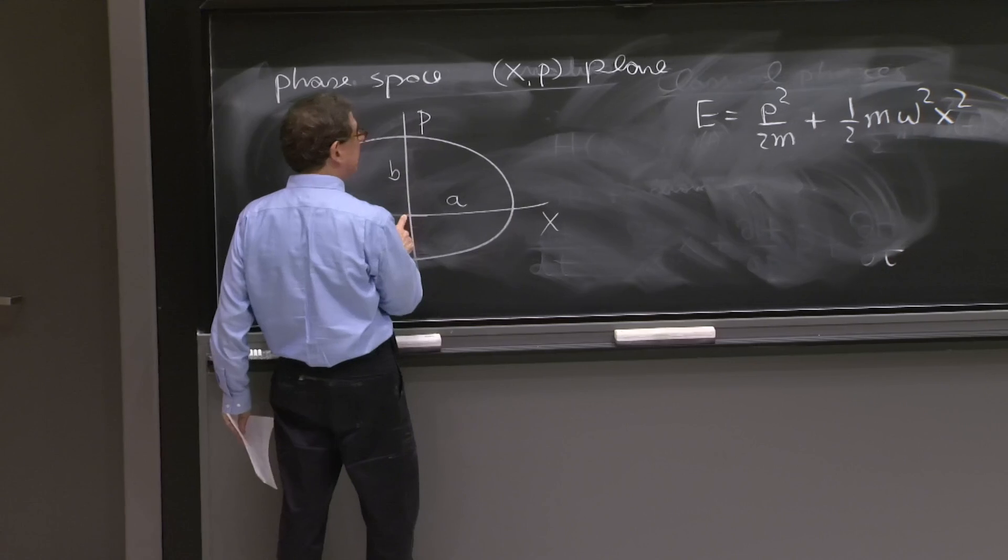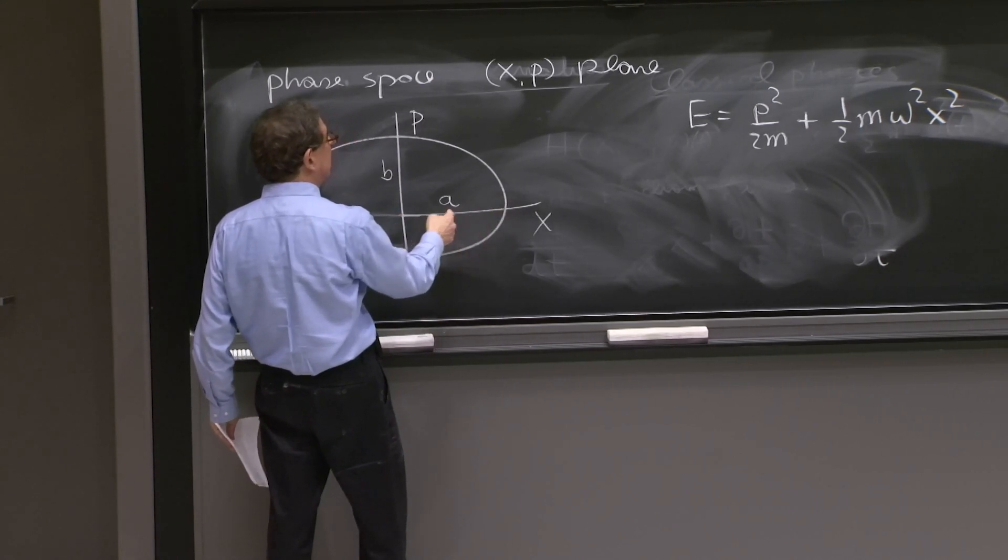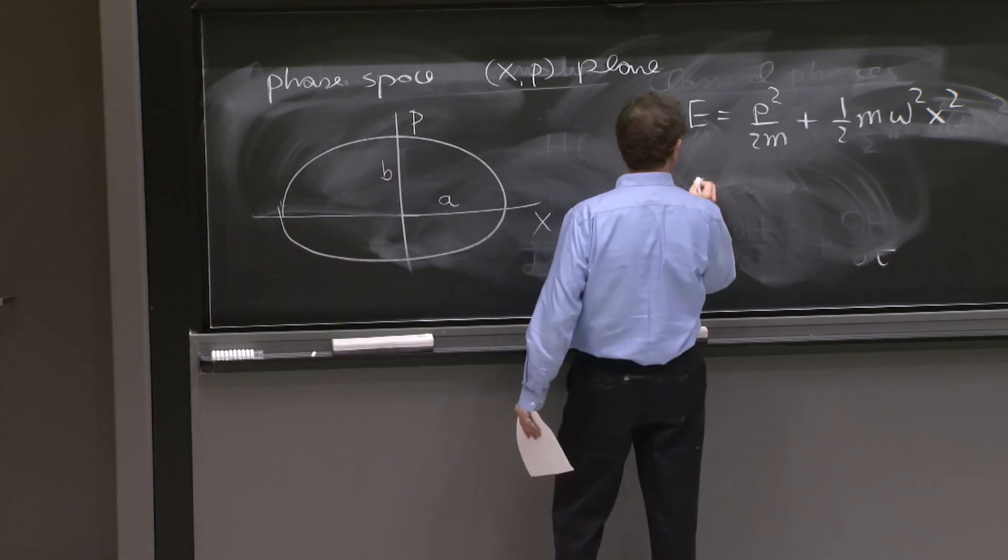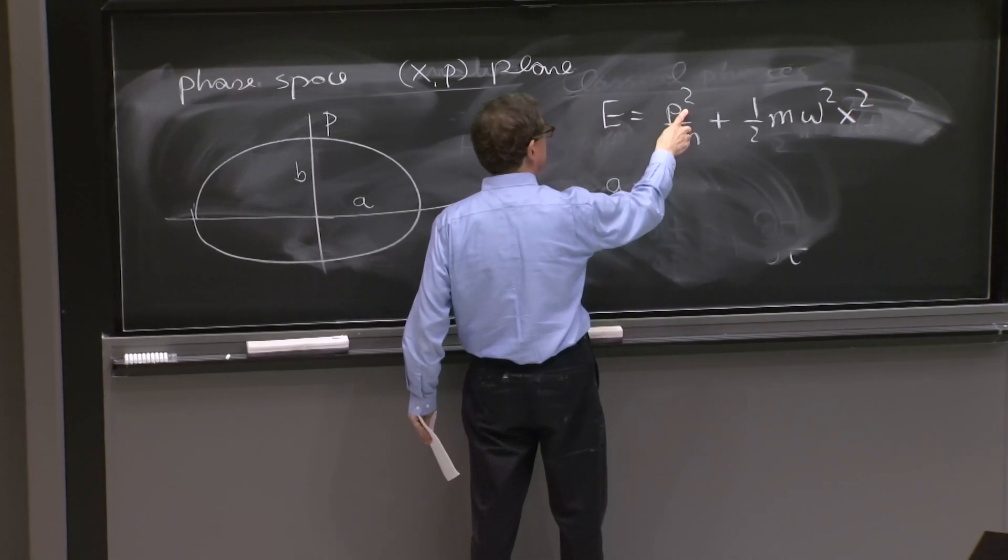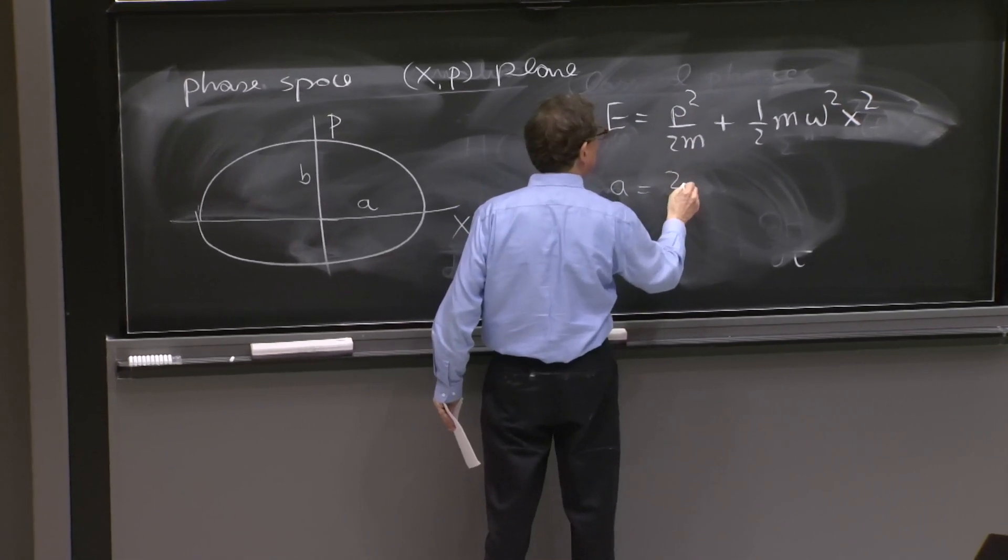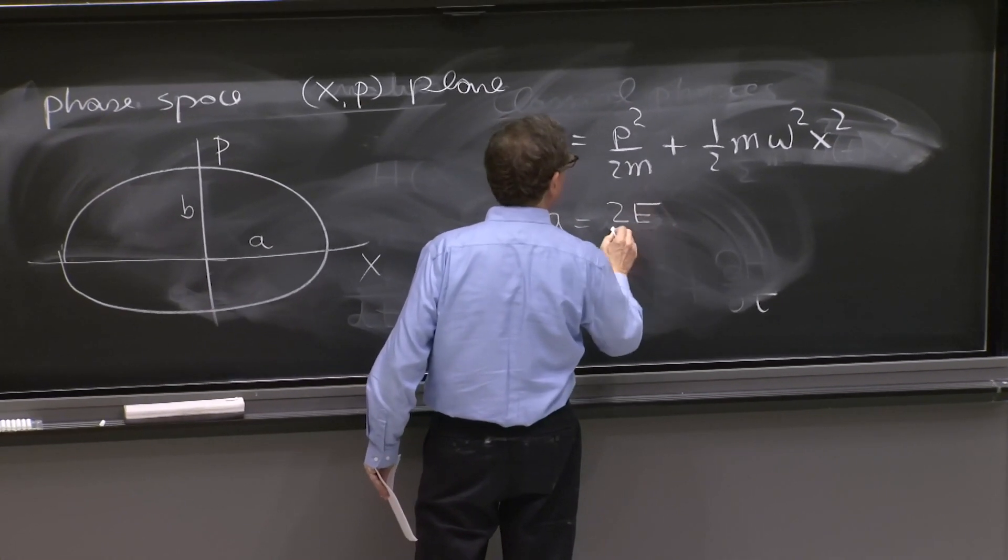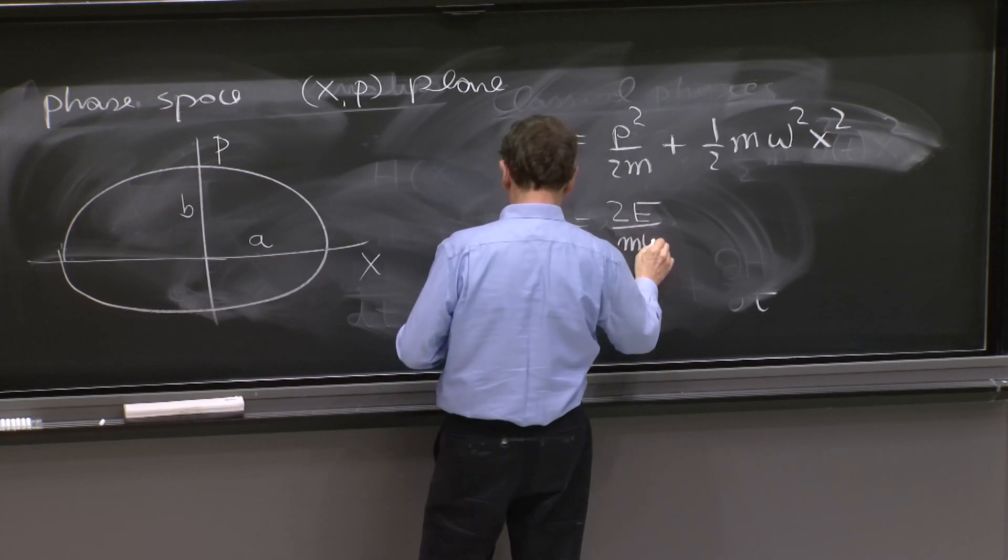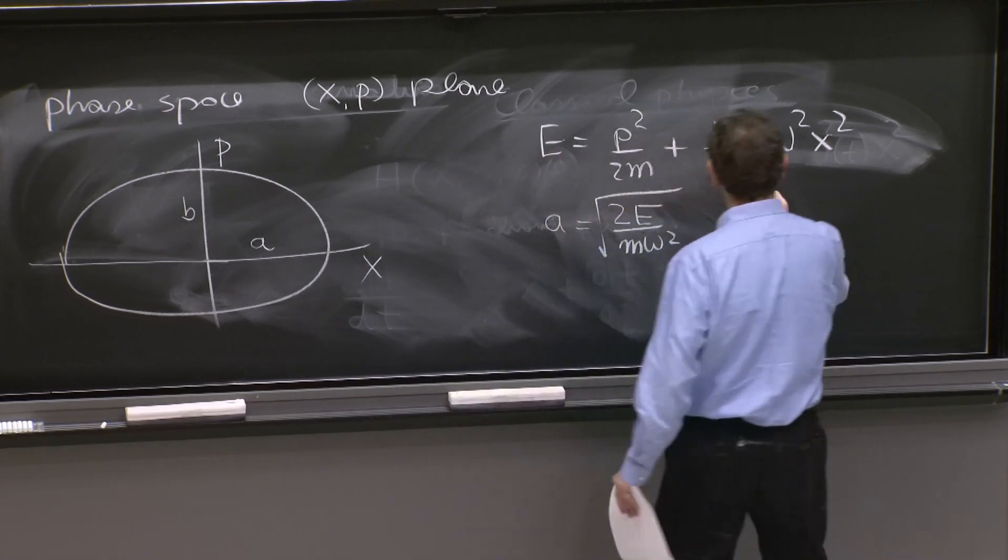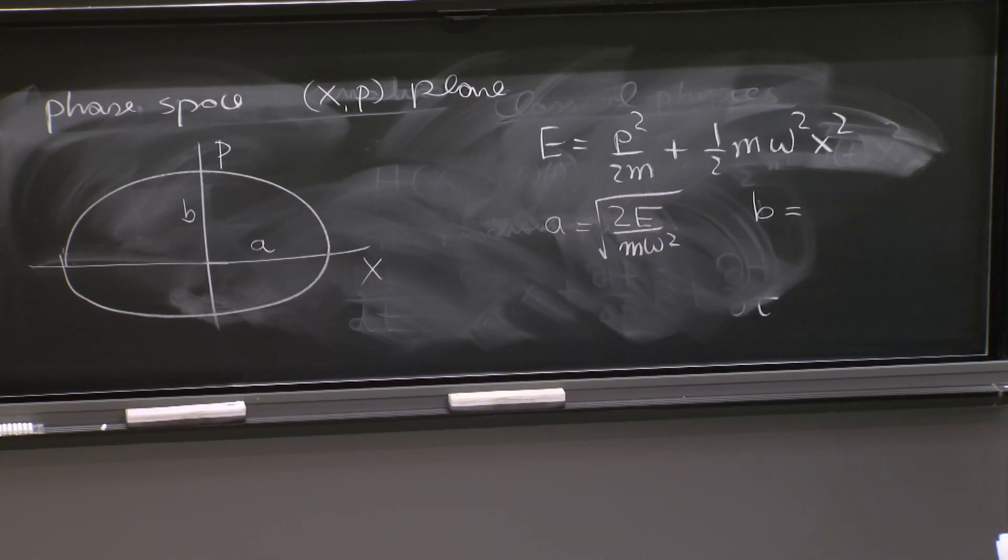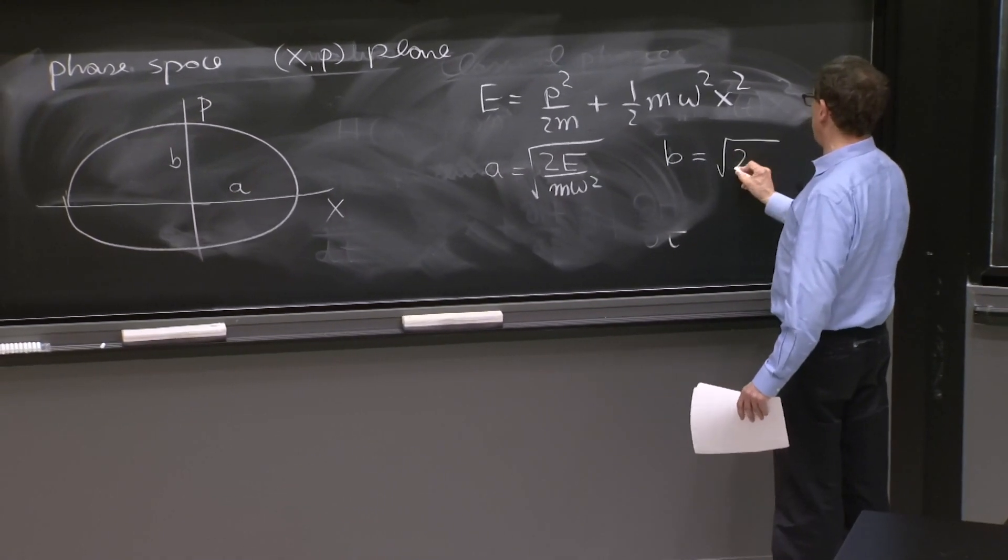Well, when p is equal to 0, what is the value of x? So a is the value of x when p is 0. So it's square root of 2E over m omega squared. And b is the value of p when x is equal to 0. So it's just square root of 2mE.